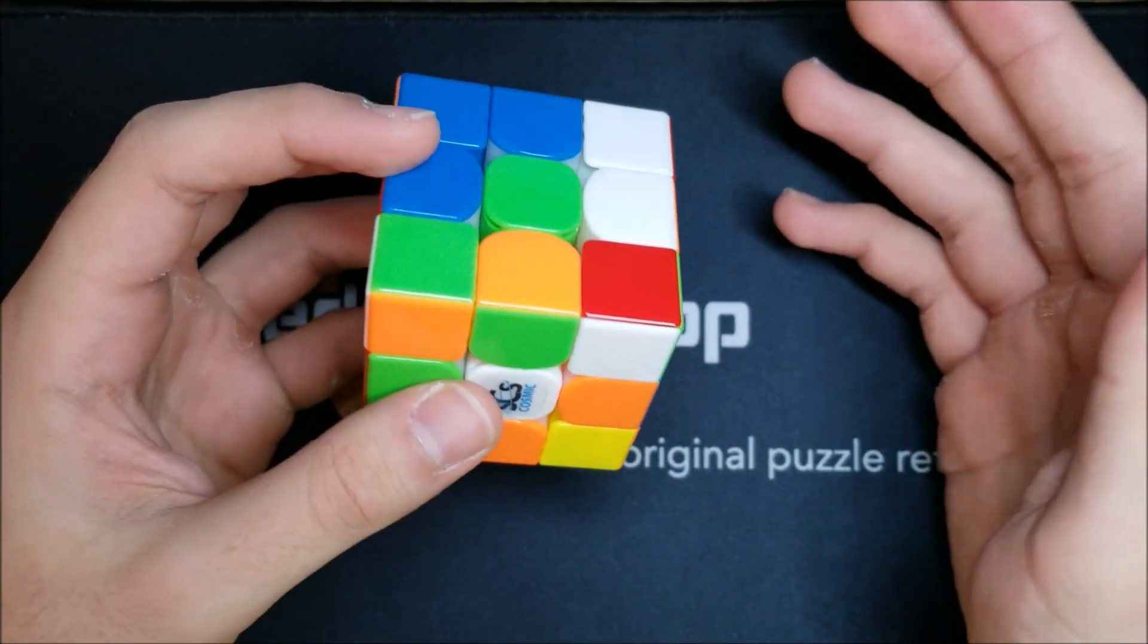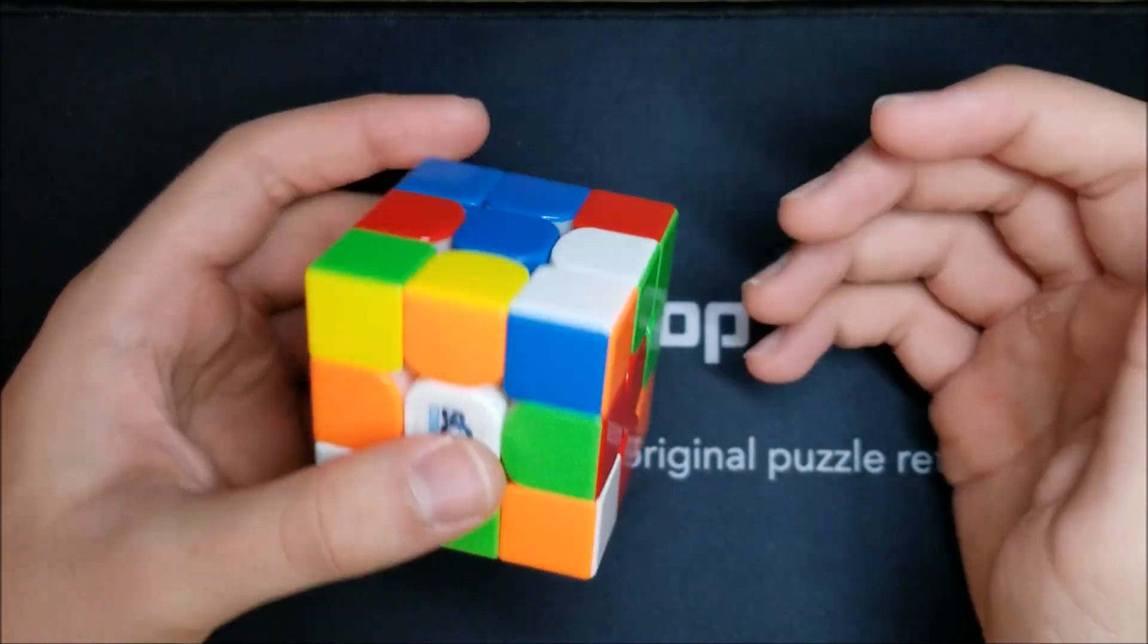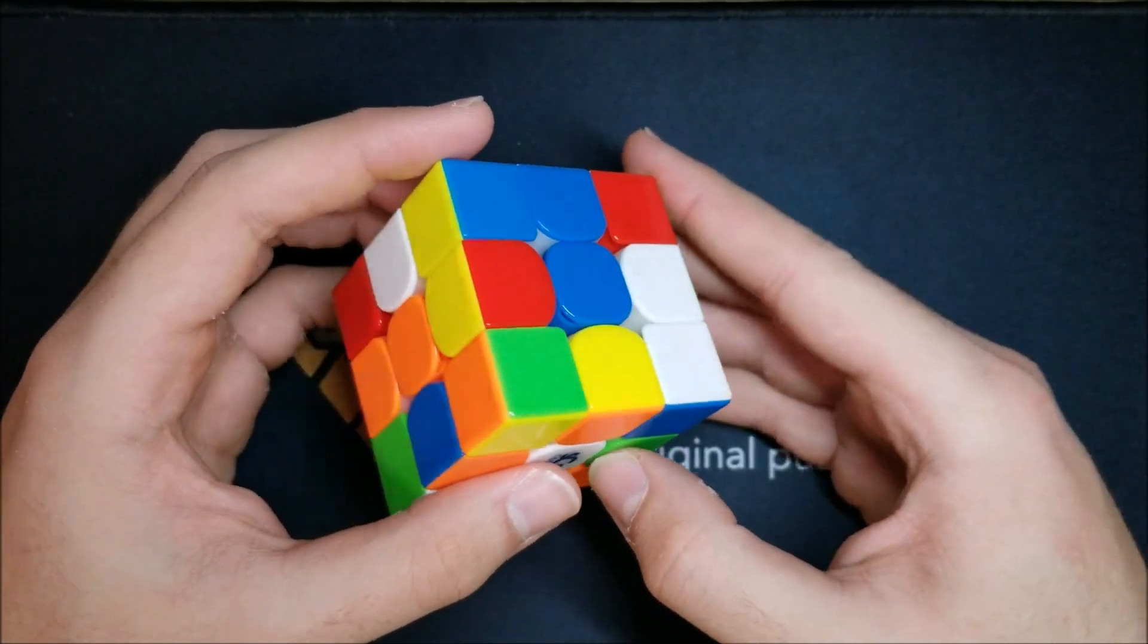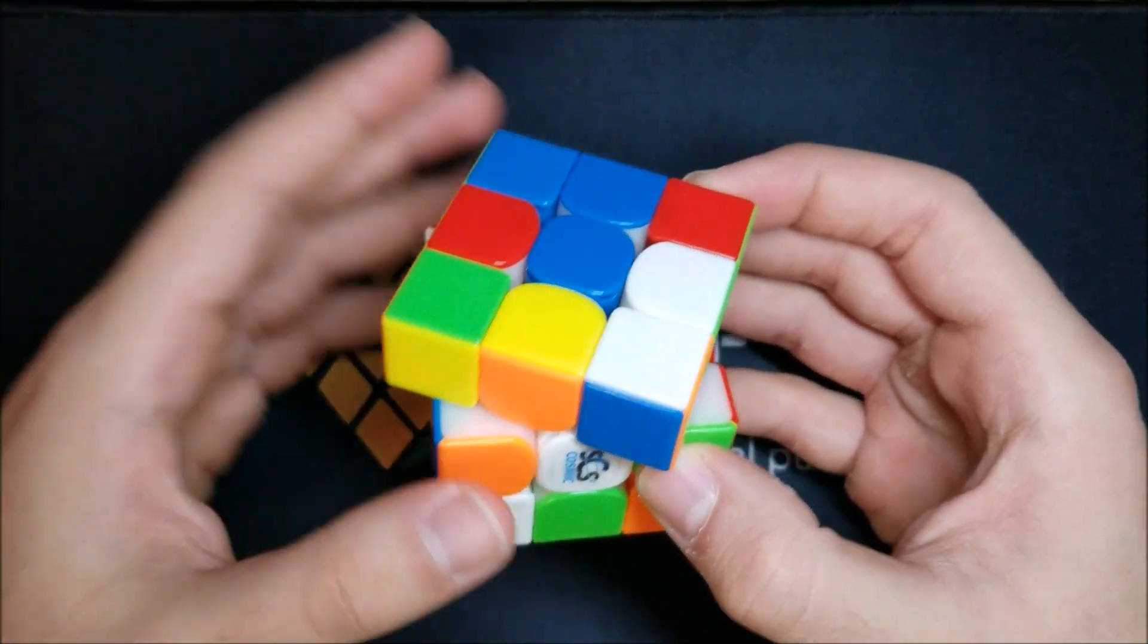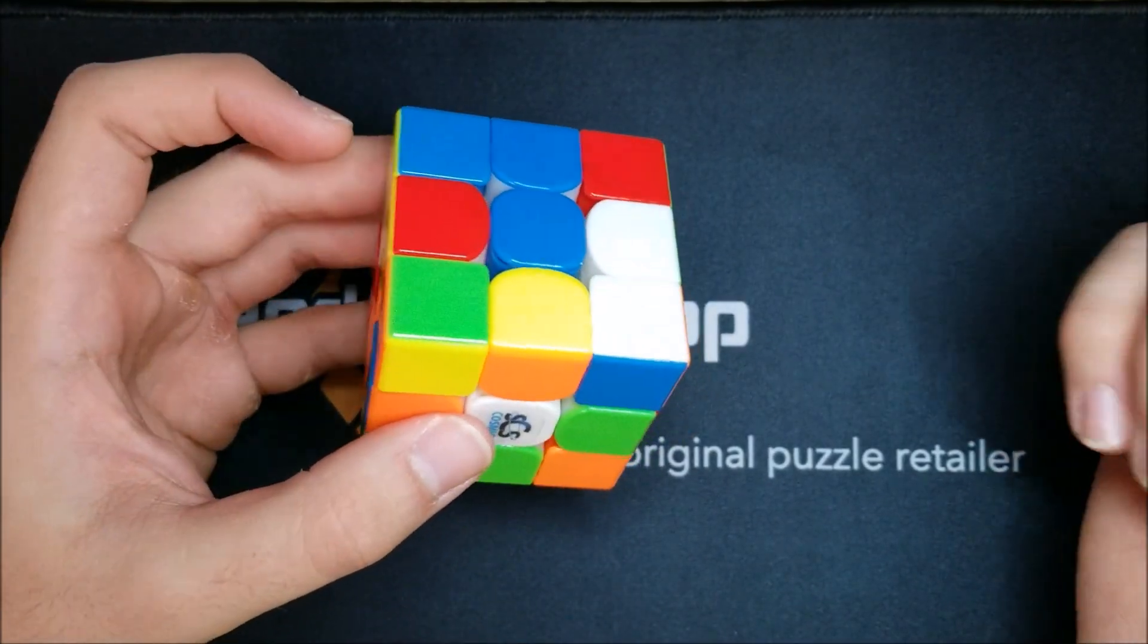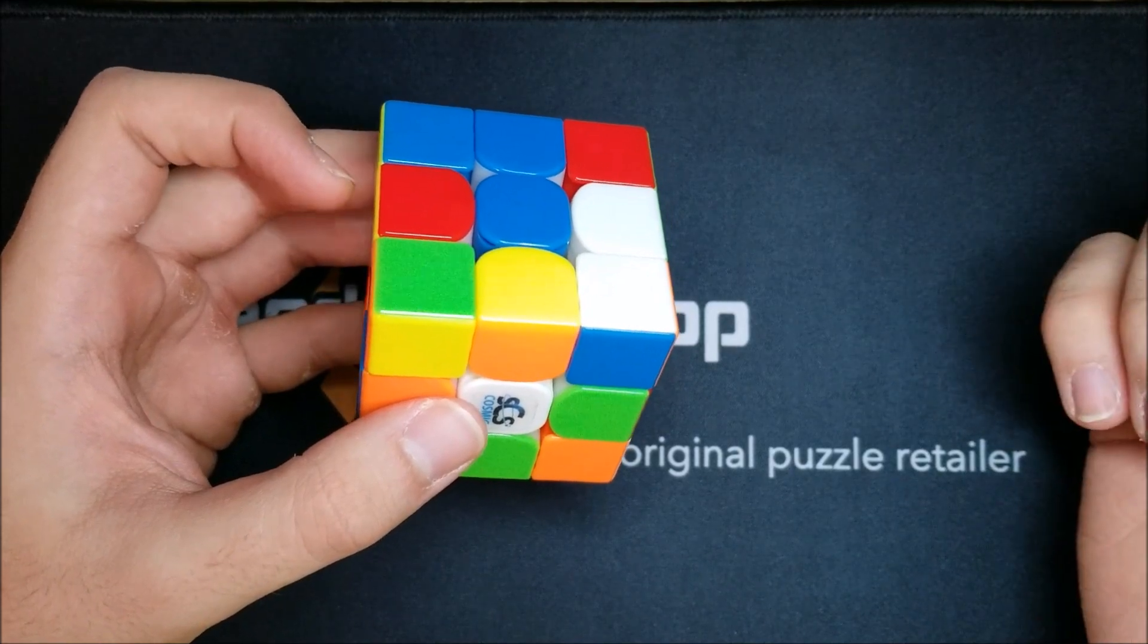And then even further you can do a first block plus second block, the whole second block blindfolded. And I think the reason this practice method is so effective, especially for the blocks, is because the more you know about exactly what you're going to do before starting the solve, the less you need to look ahead and the faster you can turn.